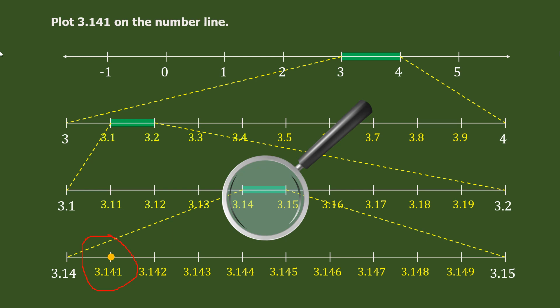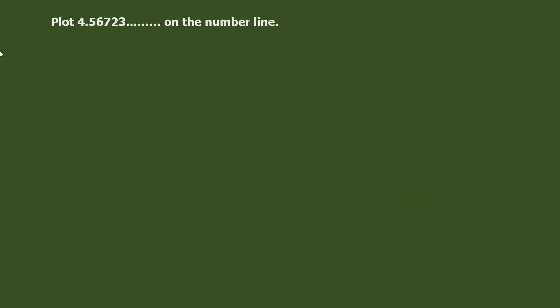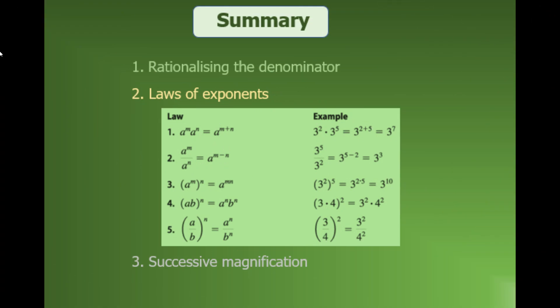Now you understand what successive magnification is — we are magnifying the number line again and again, successively and repeatedly. What if you had to plot 4.56723... (non-terminating) on the number line? You would need to magnify infinitely, which is not possible. So if such a question comes in an exam, you just magnify up to three decimal places — plot 4.567 on the number line — and the rest we cannot plot because the decimal expansion is infinite.